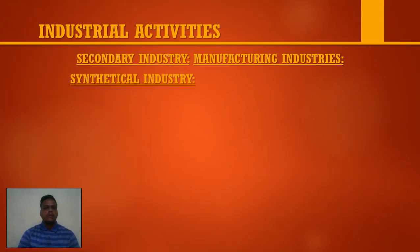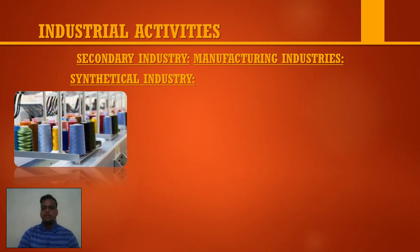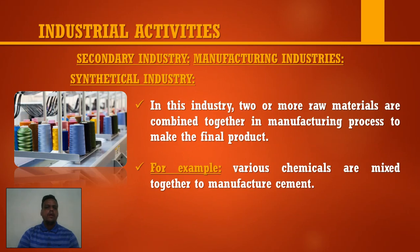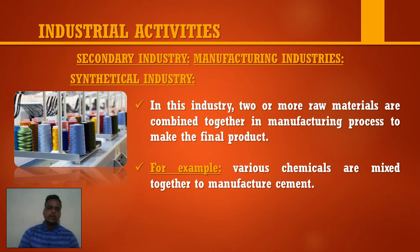Next we are talking about synthetic industries. In this industry, two or more raw materials are combined together in the manufacturing process to make finished goods. For example, thread is made of cotton, and cotton is naturally white in color. But you can see threads of different colors. That is because two different raw materials — cotton thread and dye or color made from other products — are combined together, and a new variant is created. This is called synthetic industry.